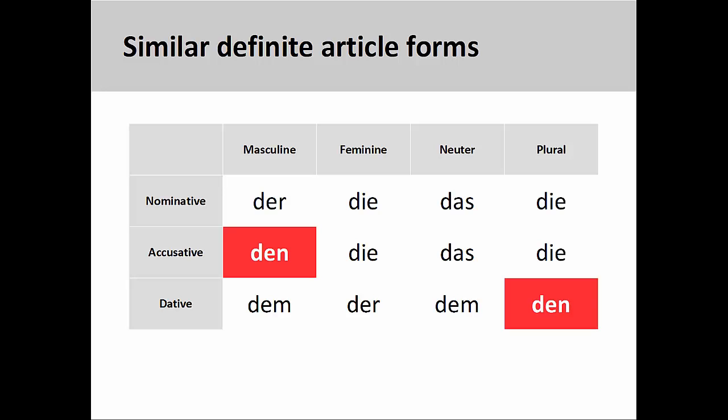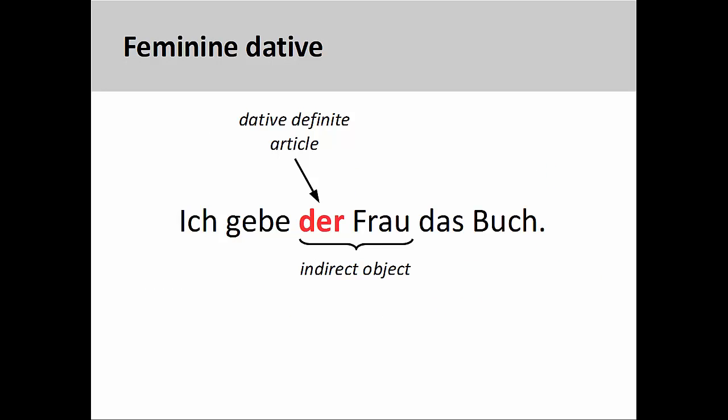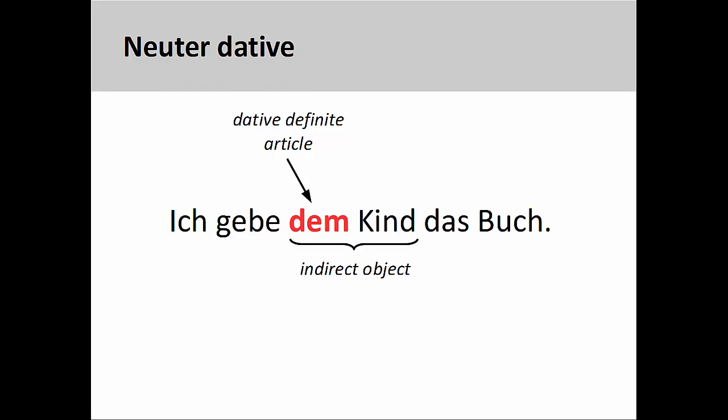Let's now take a look at some sample sentences. We've already looked at masculine dative earlier in this presentation. For the feminine dative: 'Ich gebe der Frau das Buch' — I give the book to the woman. Note that the feminine dative looks the same as the masculine nominative. And here is the neuter dative: 'Ich gebe dem Kind das Buch' — I give the book to the child. The masculine and neuter dative have the same form, 'dem'.